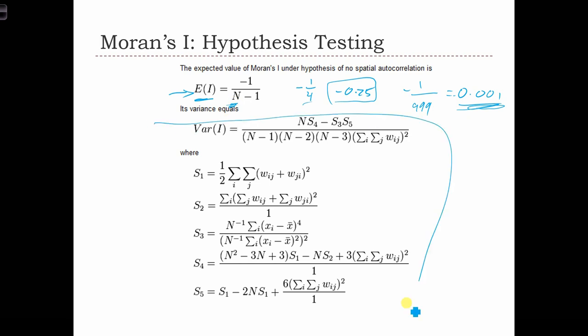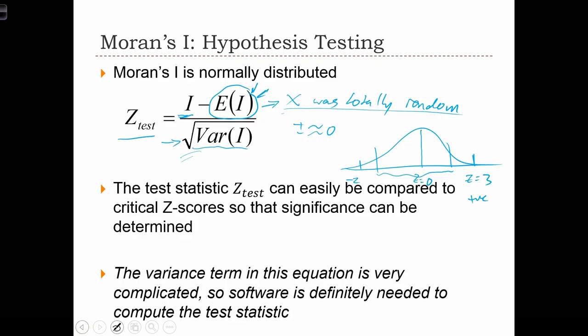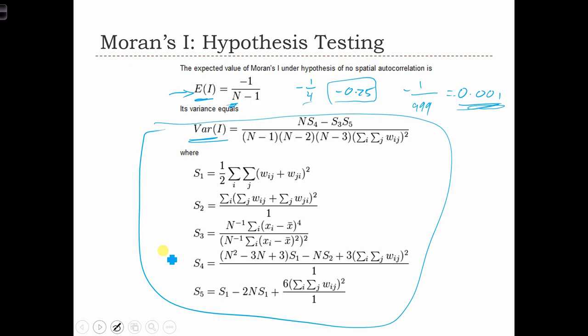All of this over here is what we need to do to compute the variance of Moran's I. Because remember, we're going to use the square root of the variance down here in order to standardize the I statistic into a z-score. This is way too complicated to do by hand, so don't worry about it at all for now. Just know that it's not magic, we just apply this formula. The computer, when you ask for Moran's I, is going to apply this formula in order to provide you with a z-score for a given level of autocorrelation.